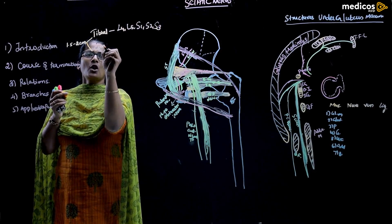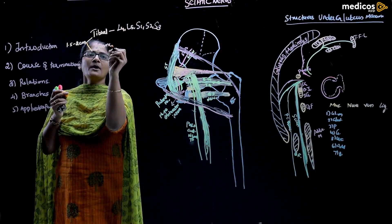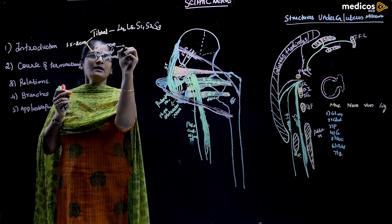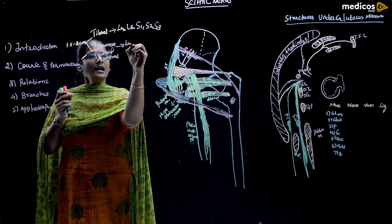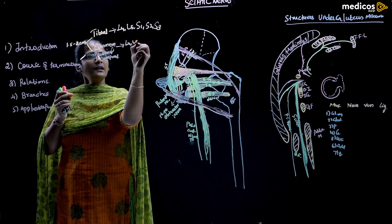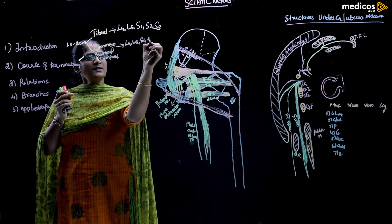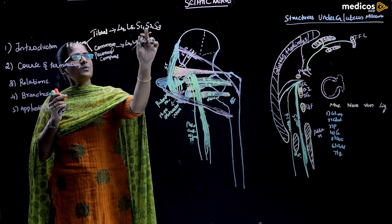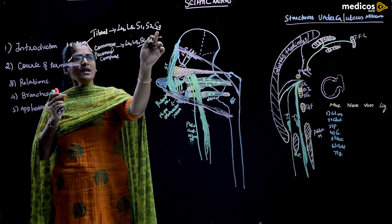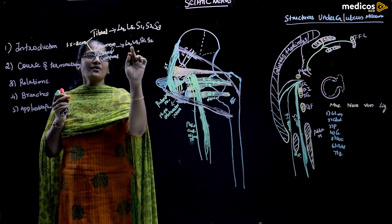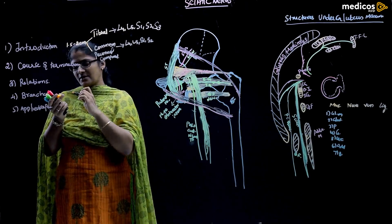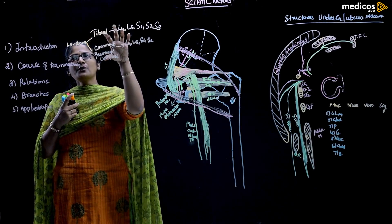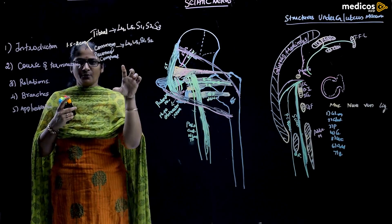The common peroneal component is formed by L4, L5, S1, S2. The tibial component is formed by the ventral division of L4, L5, S1, S2, S3, and the peroneal component by the dorsal division of L4, L5, S1, and S2. These two components join together to form the sciatic nerve.